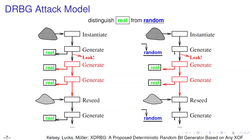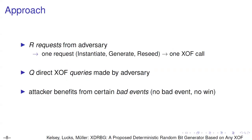The attack model is simple: the adversary lives either in the real world or the random world, and we track when the DRBG is compromised or not. Output from uncompromised Generate requests is replaced by truly random bits in the random world. If the adversary can't distinguish real from random, that is the best we can provide. We look at two variables: r, the number of requests (data complexity), and q, the number of direct XOF queries (time complexity).